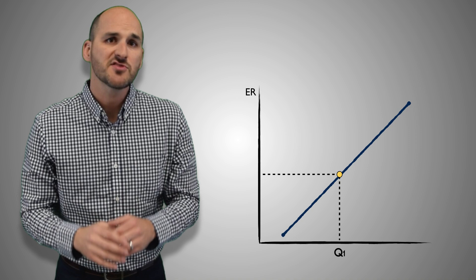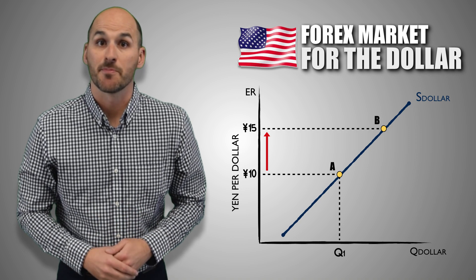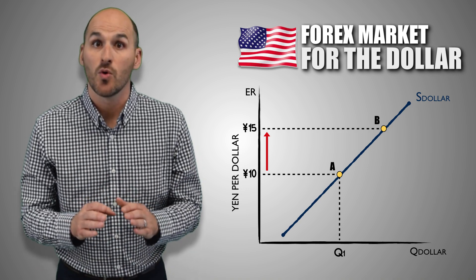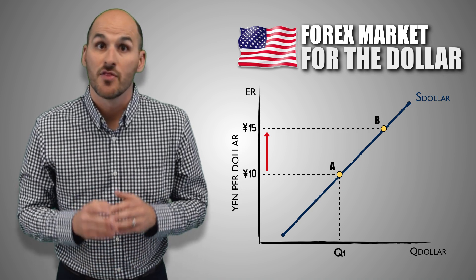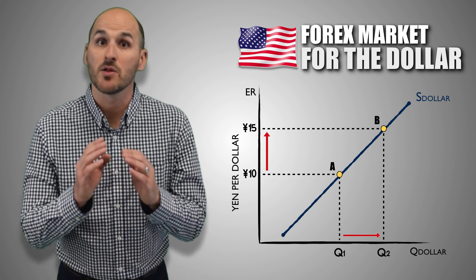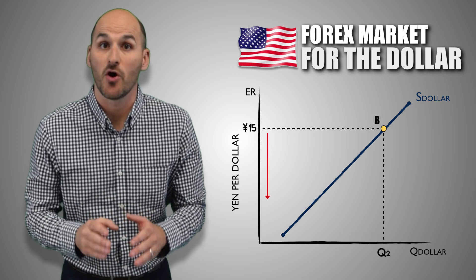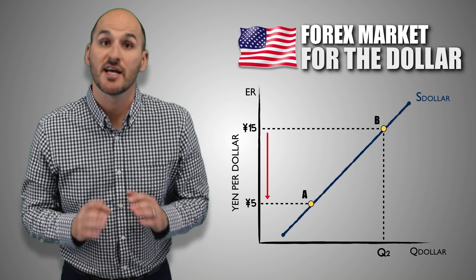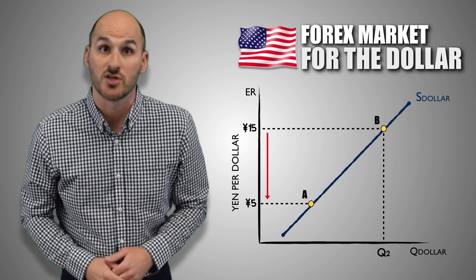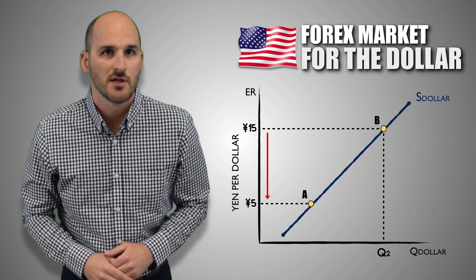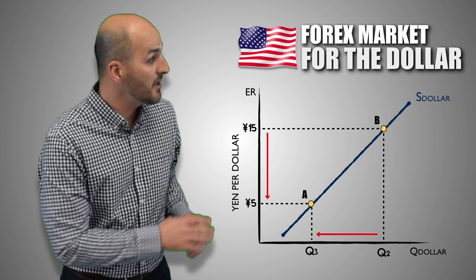For example, let's assume that the exchange rate for one US dollar increases from 10 Japanese yen to 15 Japanese yen. Currency suppliers will earn a greater quantity of Japanese yen in the exchange, so they'll want to take advantage of the higher price to convert currency in order to earn greater profits. This causes an increase in the quantity of US dollars supplied, and a movement along the foreign exchange supply curve from point A to point B. If the exchange rate for one US dollar falls to 5 yen, currency suppliers will earn a lesser quantity of Japanese yen in the exchange, so they'll become less willing or less able to supply as great a quantity of US dollars with a reduced chance to earn profits. This causes a decrease in the quantity of US dollars supplied, and a movement along the foreign exchange supply curve from point B to point A.